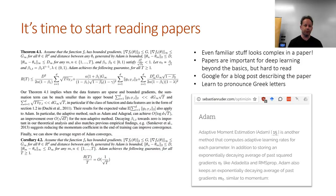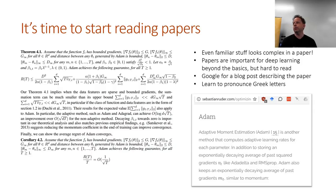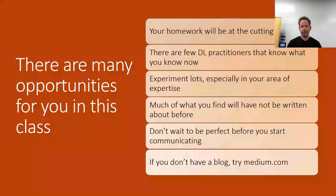Something great to do is take a paper, put in the effort to understand it, and then write a blog where you explain it in code and normal English. Lots of people who do that end up getting quite a following and some pretty great job offers, because it's such a useful skill to show you can understand these papers, implement the code, and explain them in English.